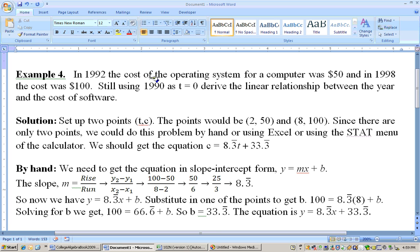Okay, in this problem it says in 1992 the cost of an operating system for a computer was $50, and in 1998 the cost was $100. It says that we're going to let t equals 0 be the year 1990, and we're supposed to derive the linear relationship. So we'll set up points t comma c, in other words the number of years after 1990 comma the cost.